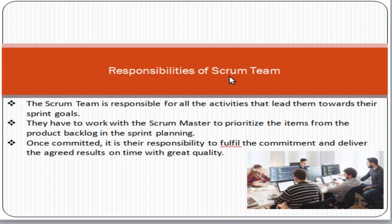In the scrum framework, we have three main roles: the product owner, the scrum team, and the scrum master. The product owner is the person who has the vision of what needs to be developed and delivered. The scrum master is the facilitator for the scrum team. The scrum team is one of the roles in the scrum framework.